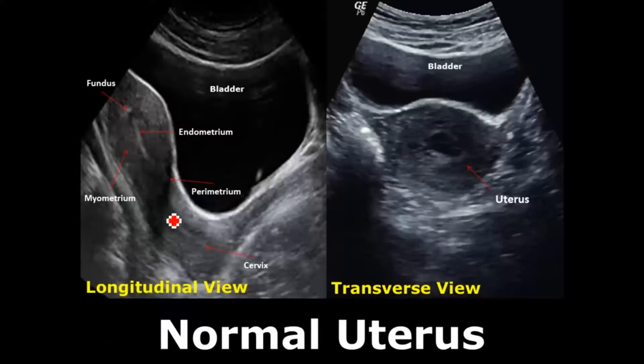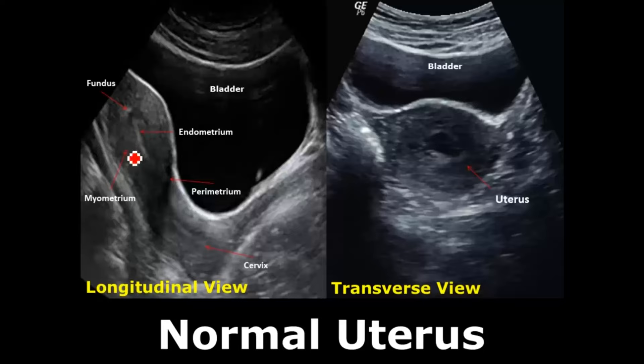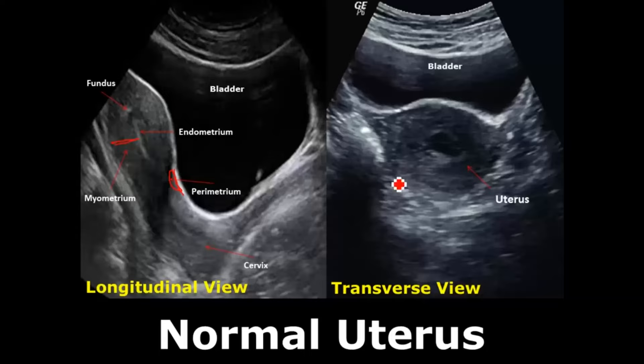In the longitudinal view, we see the most detail. The three layers of the uterus: the endometrium is the innermost layer, the myometrium is the thick muscular middle layer, and the perimetrium is the outermost layer. The top portion is called the fundus, and the lower end where it meets the vagina is the cervix.